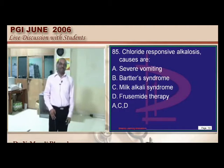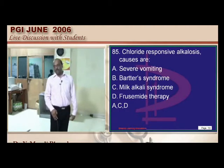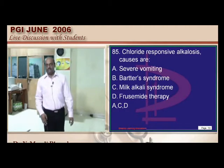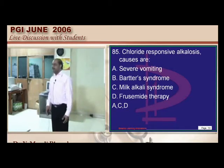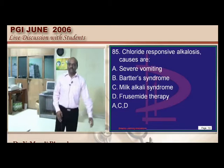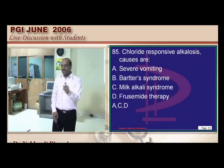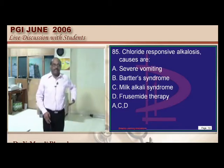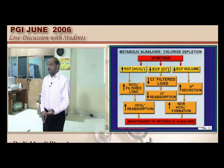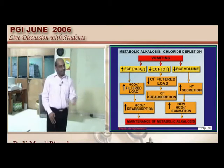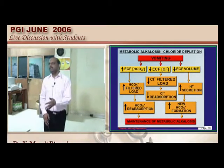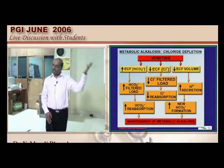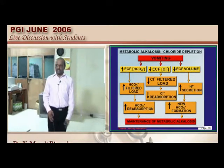Metabolic alkalosis: dehydration contracts intravascular volume, decreasing renal perfusion, stimulating the renin-aldosterone axis. Aldosterone causes sodium retention, potassium loss, and H+ loss into urine. Loss of H+ into urine leads to metabolic alkalosis.